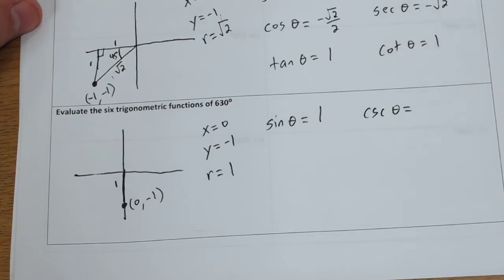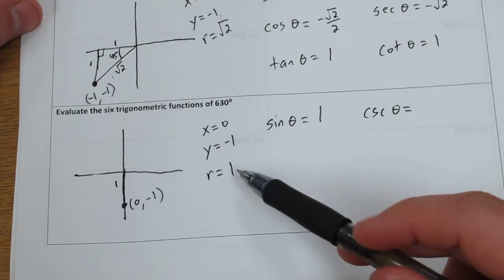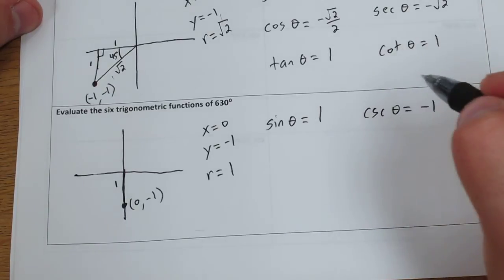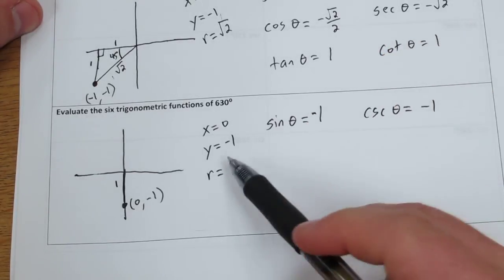Cosecant of theta is 1 over negative 1, so it's negative 1. I'm sorry, sine is negative 1 also, because y is negative.